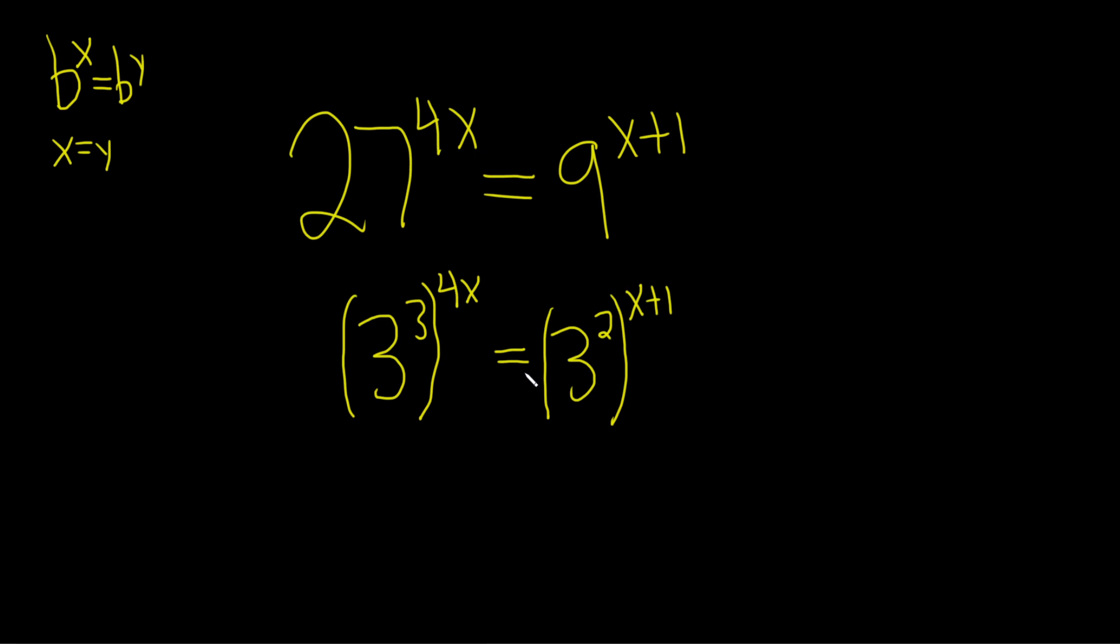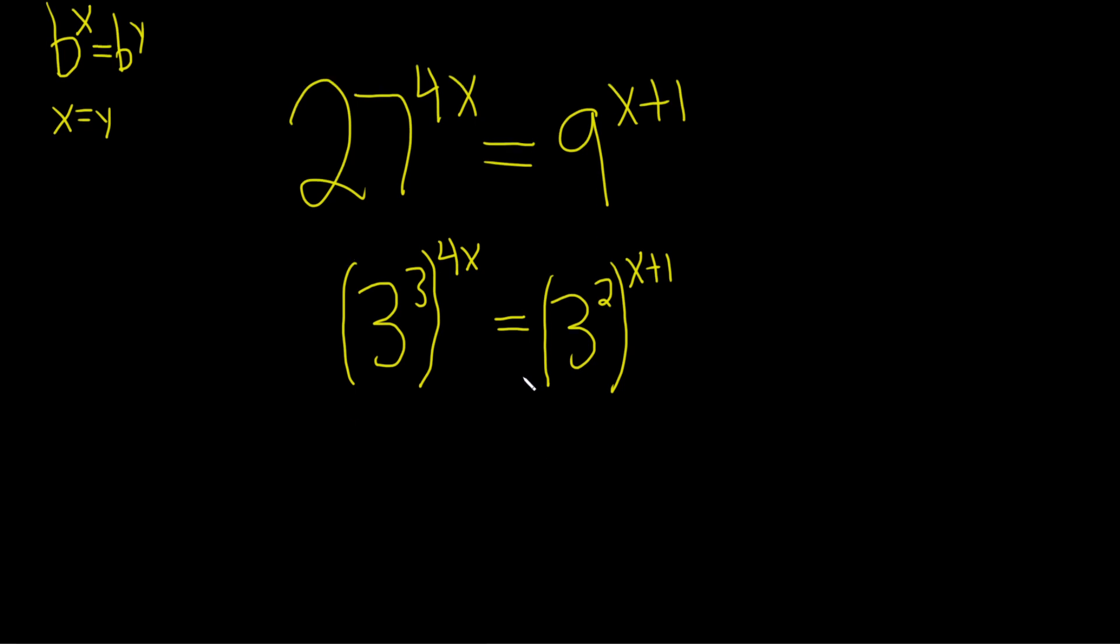Now we just have to use properties of exponents, which say that when we have something like this, we multiply. So 3 times 4x is going to give us 12x. This is 3 to the 12x equals, and then here we distribute the 2. So 2 times x is 2x, we get 3 to the 2x, and 2 times 1 is 2, so plus 2.